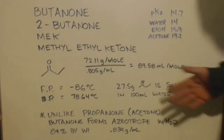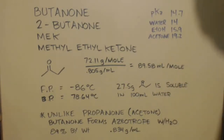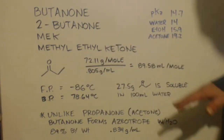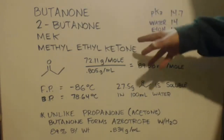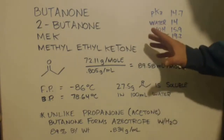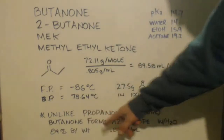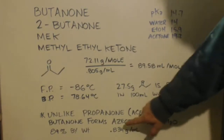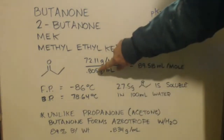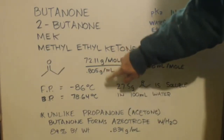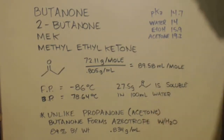25.5 grams of it is soluble in 100 milliliters of water — I'm guessing that's at room temperature. Unlike propanone or acetone, butanone forms an azeotrope with water. Acetone does not. With this stuff, it's 89% by weight butanone, and the other 11% would be the water. This is the density of the azeotrope — you can see there's a difference. Pure is 0.805, versus 0.83 and 0.80. There's a difference.